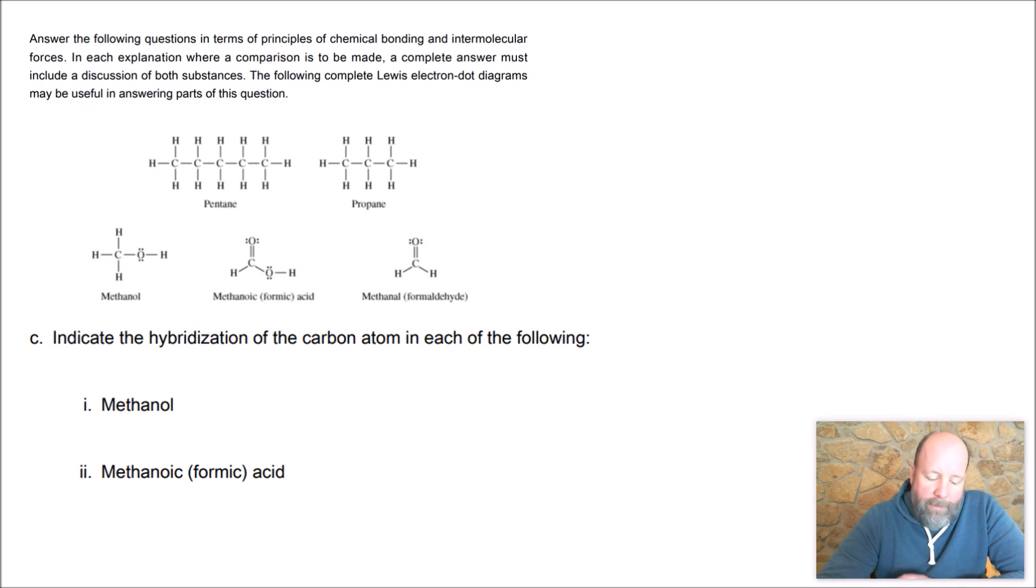Looking at part C, hybridization. So this should be easy. Remember, we have that super shortcut. All you have to do is look at how many things are stuck to it. Doesn't matter how many bonds, how many things. Either it's a lone pair or it's another atom stuck to it. Just total those up.